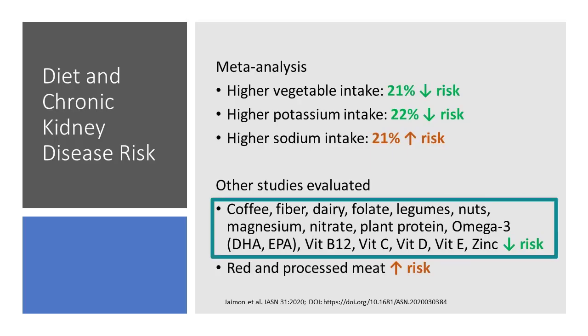What else did they find? Well, they looked at so many different variables that although they weren't able to accurately assess for them because not all the studies looked at them, what they were able to find were trends. And so those trends were in things like coffee, fiber, dairy, folate, legumes, nuts, magnesium, nitrate, plant protein, omega-3, vitamin B12, vitamin C, vitamin D, vitamin E, zinc—all had a lower risk.